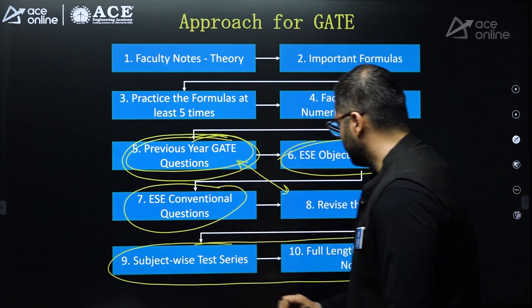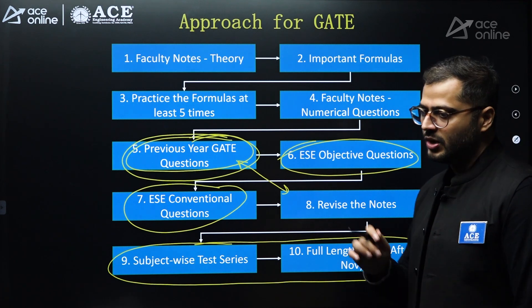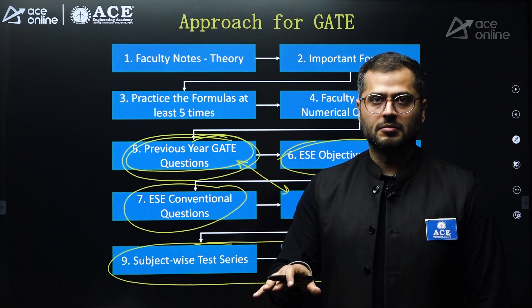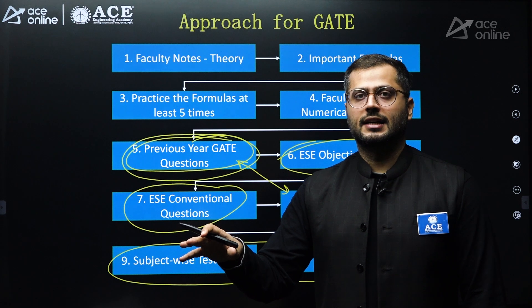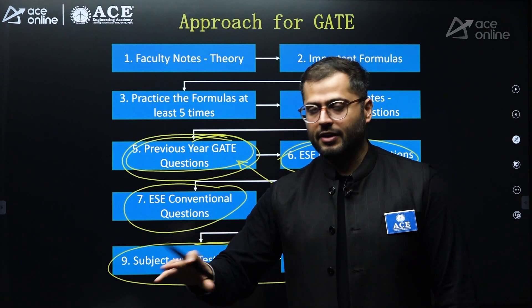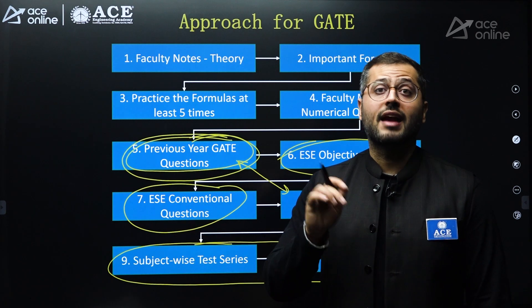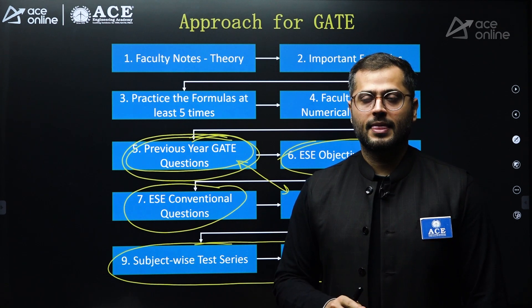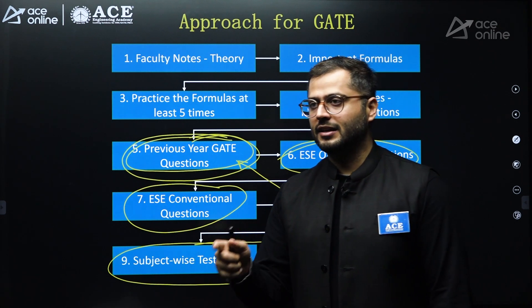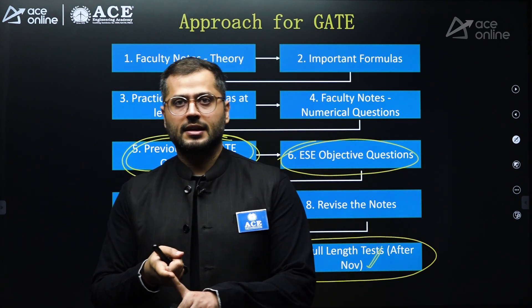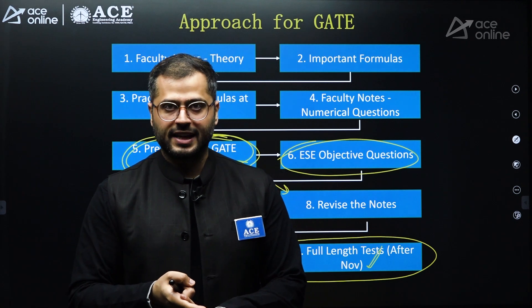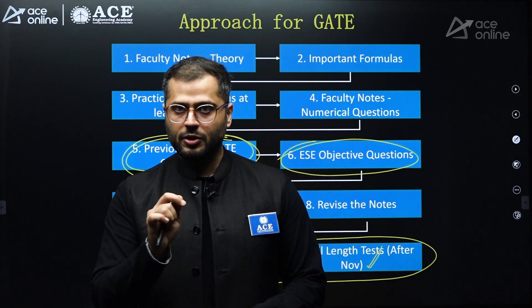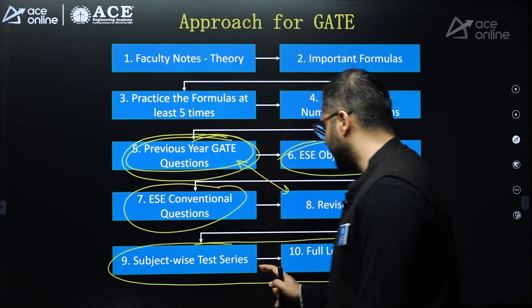Your primary focus from now on should be test series — subject-wise tests and full-length mock tests. From November itself, you need to start with full-length tests. Every two to three days, try to give a full-length test in November. In December, try to give a full-length mock test every two days. In January, every single day you have to give a full-length mock test, so that you are improving your speed, improving your accuracy, rectifying your mistakes, and covering every aspect through test series.